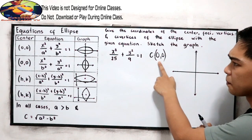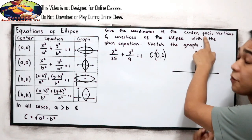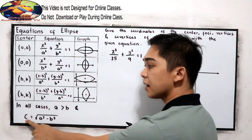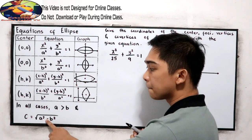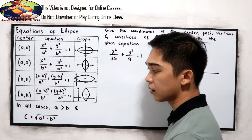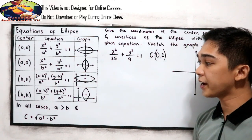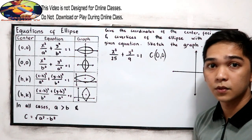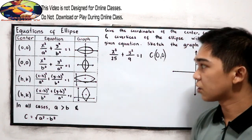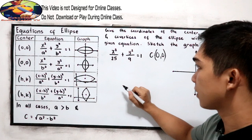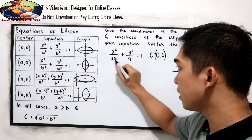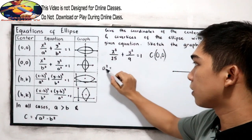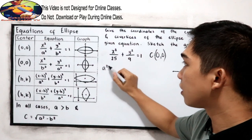Now let us find the foci. For foci, we use the formula: square root of A squared minus B squared. First, let us find what A and B are. This is our A, so A squared is equal to 25. Get the square root — A is equal to 5.